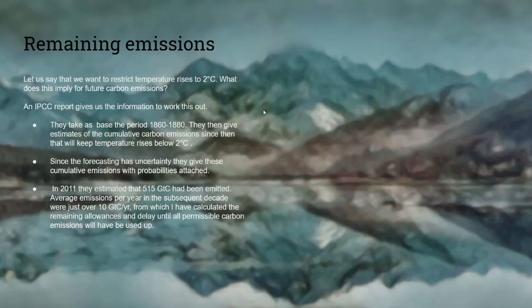Let's start by looking at what the remaining emissions the world is allowed are to stay within the two degrees centigrade limit. As I showed in my last talk, even if you stay within two degrees centigrade, we stay in the low 400s parts per million of CO2 — a Pliocene climate with no ice on Greenland and much higher sea levels. The IPCC took 1860 as their base year and give estimates of cumulative carbon emissions since then, and the cumulative emissions going forward that would keep temperature rises below 2 degrees centigrade.